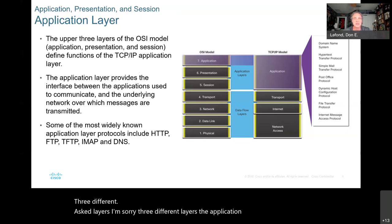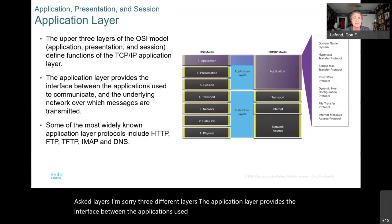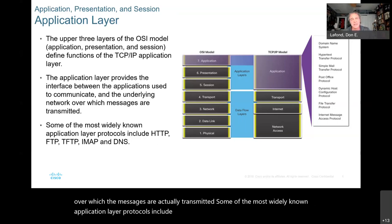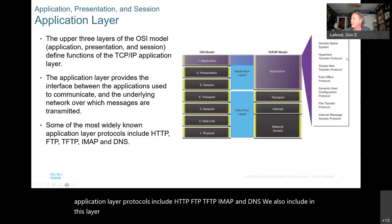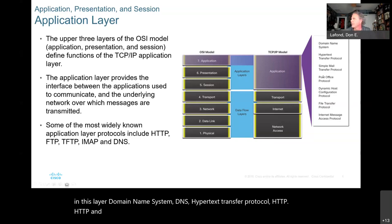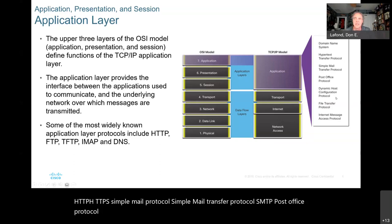The application layer provides the interface between the applications used to communicate and the underlying network over which messages are transmitted. Some of the most widely known application layer protocols include HTTP, FTP, TFTP, IMAP, and DNS. We also include domain name system DNS, hypertext transfer protocol HTTP, HTTPS, simple mail transfer protocol SMTP, post office protocol POP, dynamic host configuration protocol DHCP, file transfer protocol FTP, and internet message access protocol IMAP.